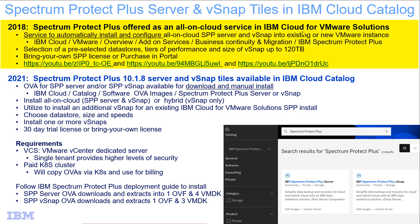Back in 2018, we introduced a service that offers an all-on-cloud installation and automatic deployment of the Spectrum Protect Plus Server and vSnap into either new or existing VMware instances in the IBM Cloud. This service offered pre-selected data stores and tiers of performance, and you could size your vSnap up to 120 terabytes.